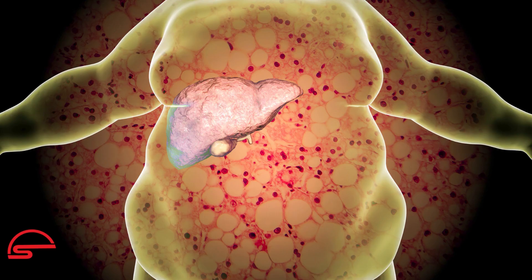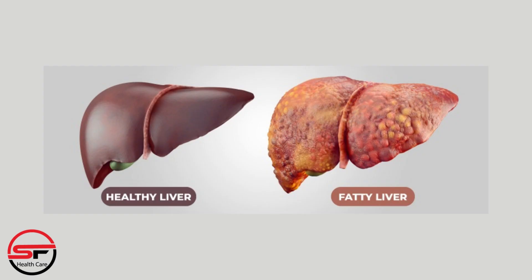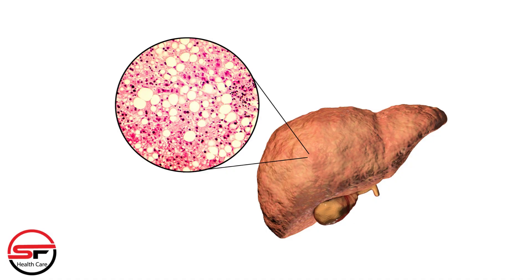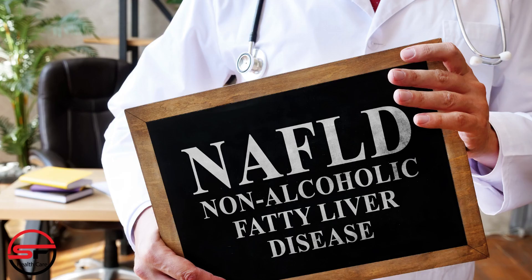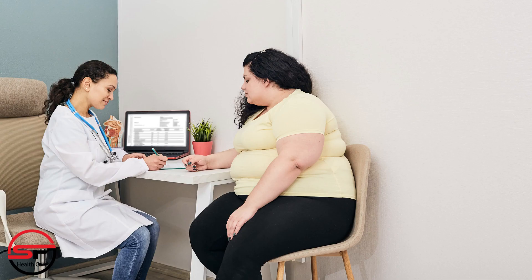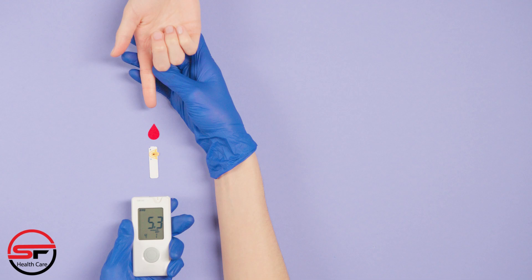What is fatty liver disease? It's a condition where excess fat accumulates in the liver cells. This can happen due to various factors, the most common being excessive alcohol consumption, called alcoholic fatty liver disease, and non-alcoholic causes, called non-alcoholic fatty liver disease, or NAFLD. NAFLD is often associated with obesity, diabetes, and high cholesterol.